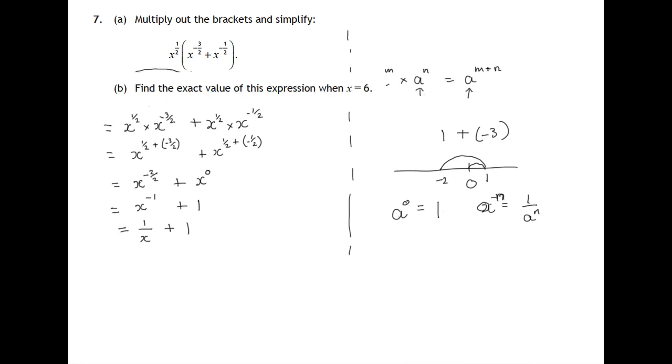Let's move on to the second part. Find the exact value of this expression when x equals 6. That's part A that we did up there, and we're now moving on to part B. So when x equals 6, the expression is 1 over 6 plus 1. That's 1 and 1 sixth, or 7 sixths exact value.